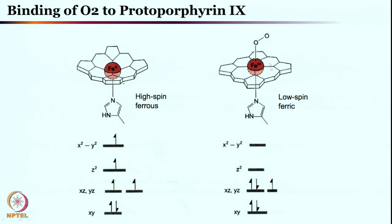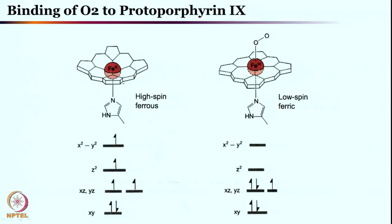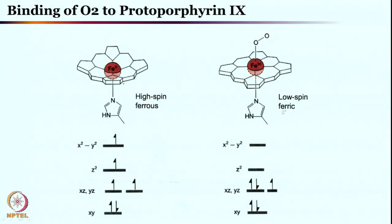Once oxygen binds to the iron 2+ center, it becomes iron 3+. Iron gets oxidized to iron 3+ and oxygen gets reduced to superoxo. Iron 2+ first binds oxygen, then transfers an electron into the oxygen moiety. Iron 2+ is oxidized to iron 3+, its size decreases, and now it fits perfectly in the porphyrin cavity. With six-coordinate geometry it becomes low spin ferric, with T2G5 electronic configuration. High spin to low spin conversion occurs upon oxygen binding, and one electron from iron 2+ transfers to oxygen to give an iron 3+ superoxide species.